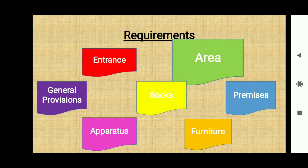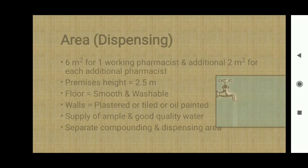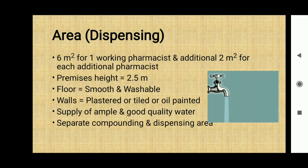Next is the area. The dispensing area should be six meters square for one working pharmacist, and for any additional pharmacist, an additional two meters square should be added. The height of the pharmacy store premises should be at least 2.5 meters. The floor should be smooth and washable, and the walls should be plastered, oil painted, or tiled. It should supply an ample amount of good quality water and must have a separate compounding and dispensing area.